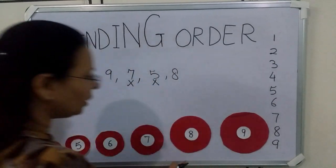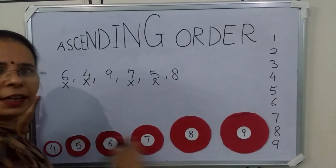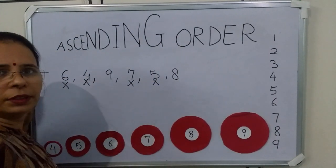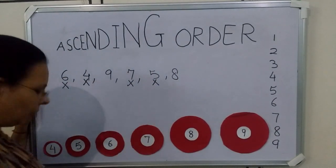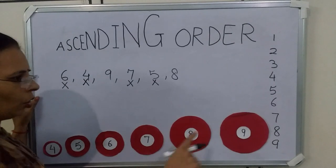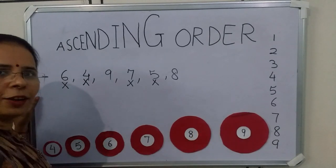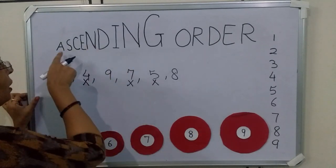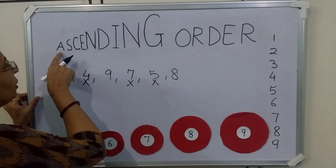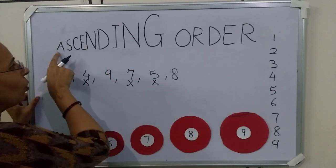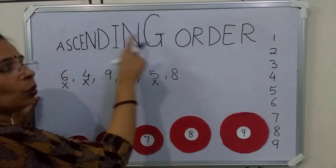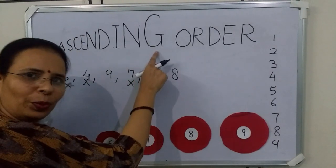You can see we have arranged these numbers in ascending order. Ascending order means arranging the numbers from small to big.